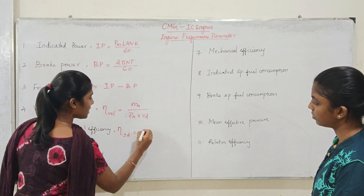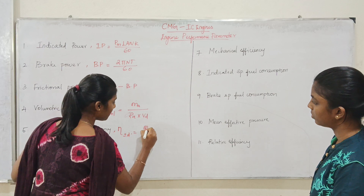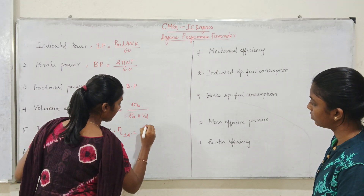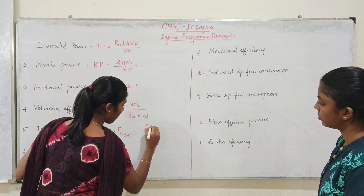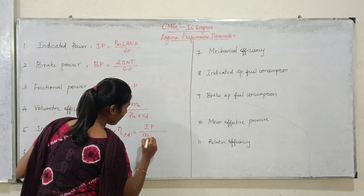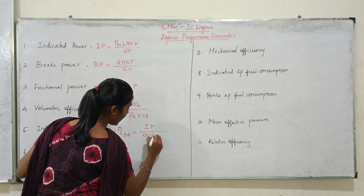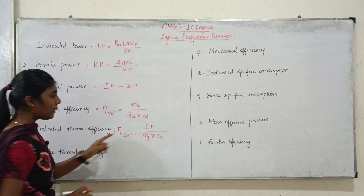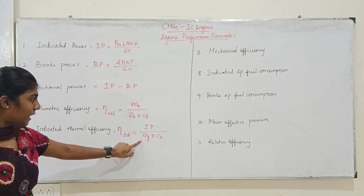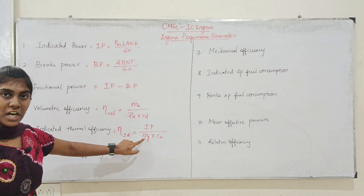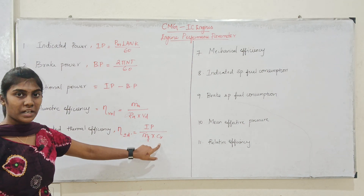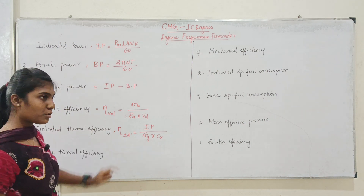Indicated thermal efficiency, denoted as η_ith, is equal to indicated power divided by mass flow rate into calorific value, that is IP divided by m_dot into CV.